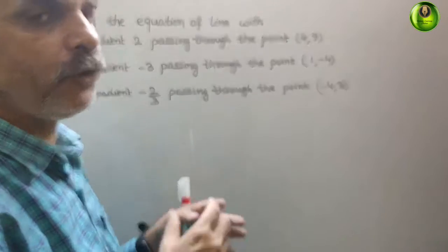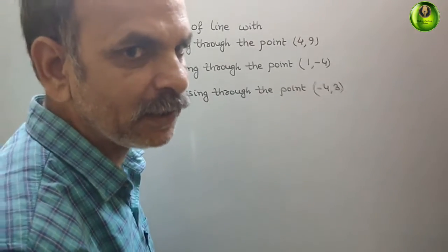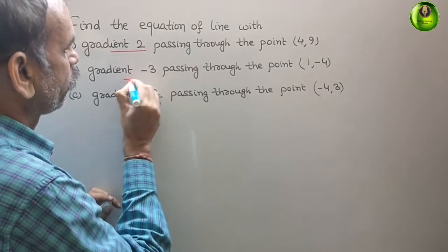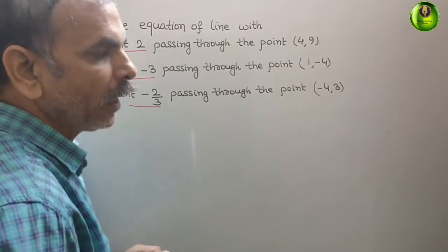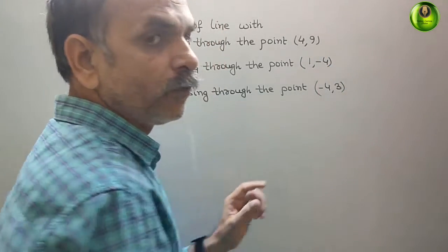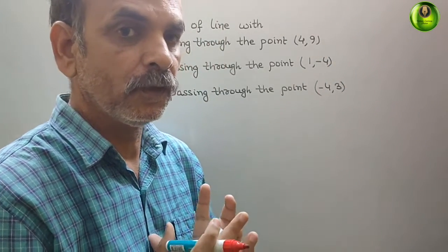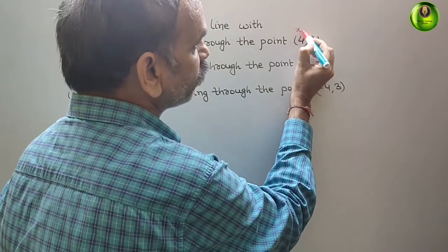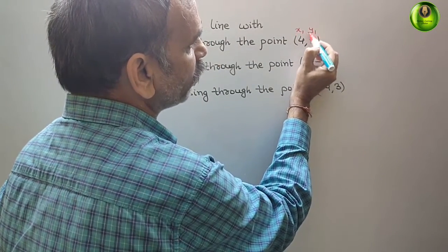Here, if you see what they have given, they have given the gradient and they have given a single point, one point. So here what we will do, just we will take this point as your x1 and this is your y1.